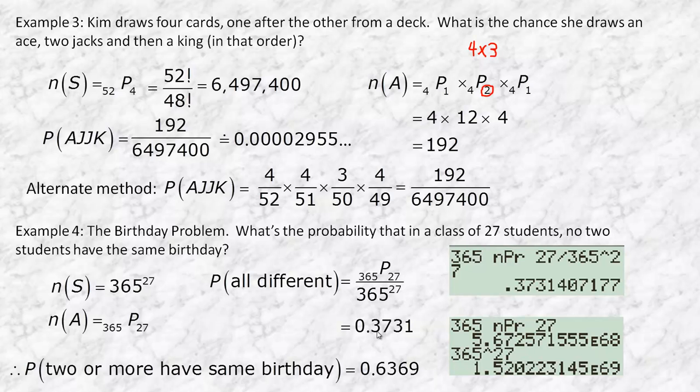So notice that the probability is 37% chance, approximately, that no two people had the same birthday. So the actual probability that two or more have the same birthday would be about 63, almost 64%. So there's actually, when you get a group this large, it's starting to be fairly likely that two or more people have the same birthday. Notice that the only thing you really need here to calculate this is the number of people. So it's always going to be 365 permute the number of people, over 365 to the power of the number of people.